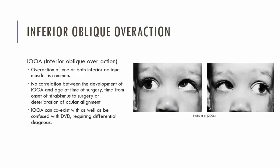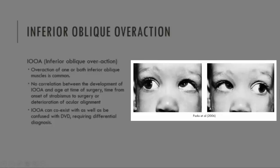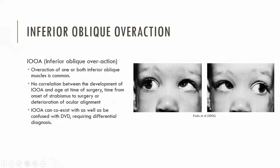An infantile ET can also be associated with inferior oblique overactions. It could be either just one inferior oblique overacting or both inferior obliques overacting. If we take a look at the image of the patient who has an infantile esotropia — this is the patient in right gaze and this is the patient in left gaze — we can see in right gaze that the left eye is elevated due to the inferior oblique. In left gaze, the right eye is now elevated due to the inferior oblique overaction, and assessing the patient in the corresponding diagonal positions would confirm those inferior oblique overactions.